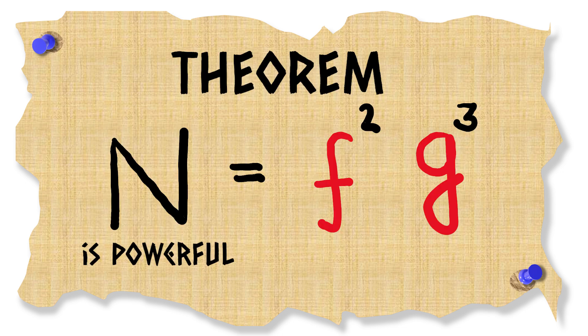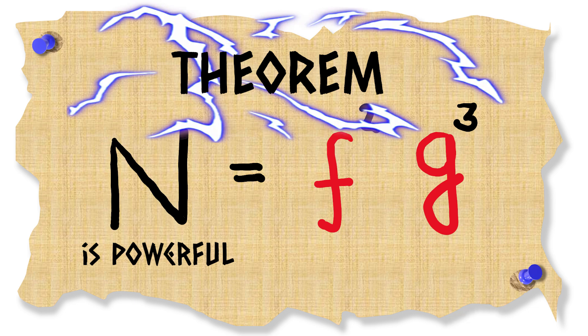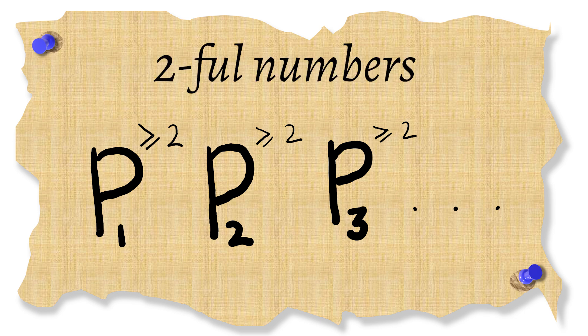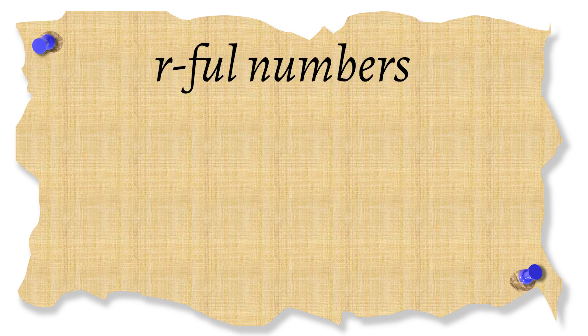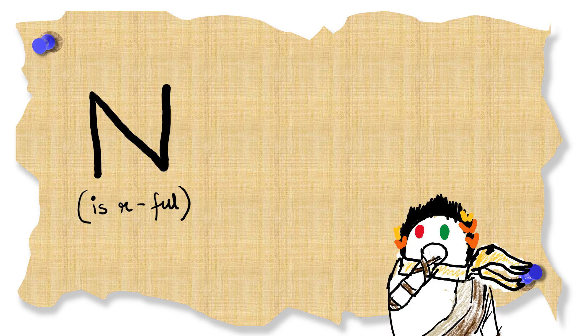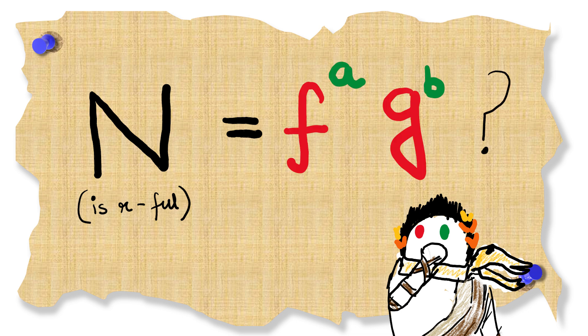Turns out it's actually possible to make this theorem even more powerful. So we had that all powers were at least two right? We call them two full numbers. What about in general r full numbers? So like numbers where each prime factor appear at least r times. Given an r full number n, can we write it as some f to the power a times g to the power b?